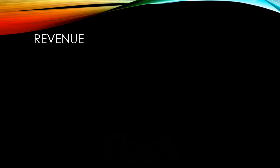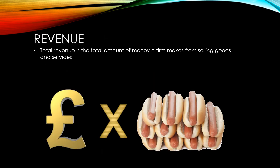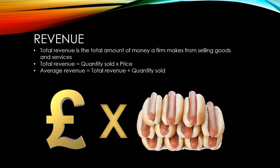Total revenue is the amount of money a firm makes from selling its goods and services. It can be found using the formula: quantity sold times price. Average revenue is the total revenue divided by quantity sold — therefore, the average revenue is the same as the price.